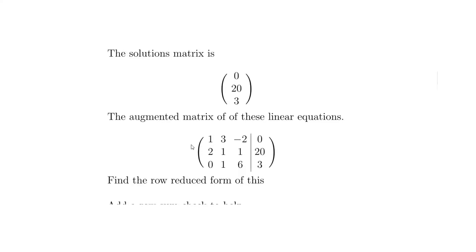Now we're going to find the row-reduced form, which basically involves finding the identity matrix. The identity matrix has ones on the diagonals and zeros everywhere else. So the three, minus two, and the one in the off-diagonal positions will all become zero.